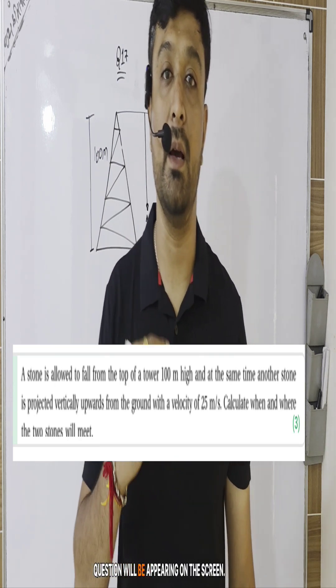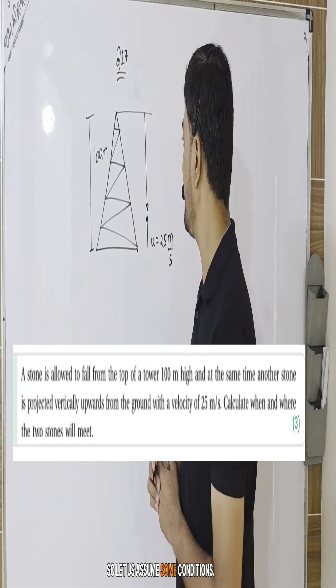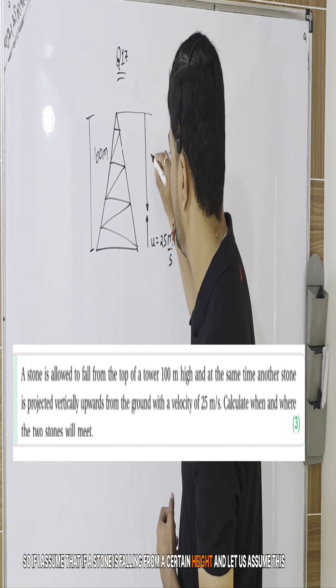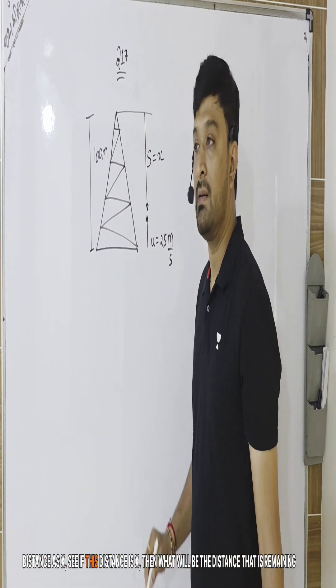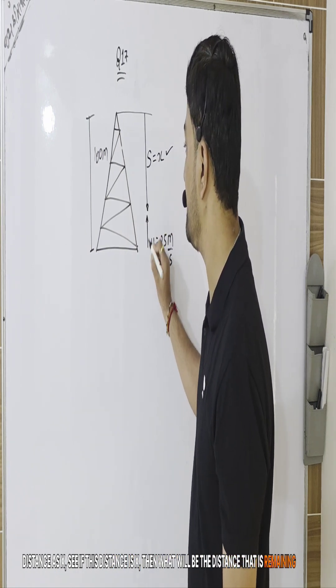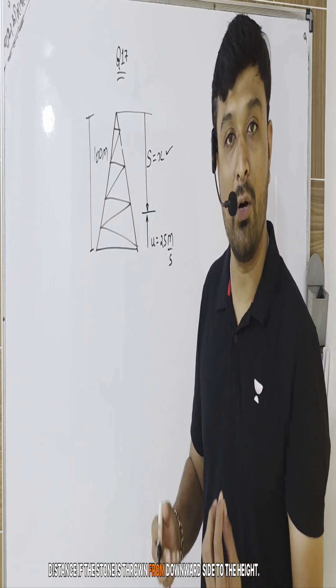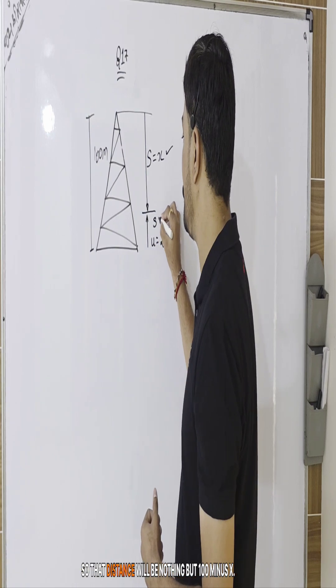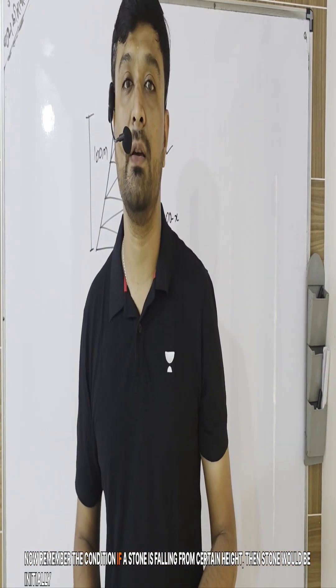The question will be appearing on the screen. Let us assume some conditions. If a stone is falling from a certain height, let us assume this distance as x. If this distance is x, then what will be the remaining distance if the stone is thrown from downward side to the height? That distance will be nothing but 100 minus x.